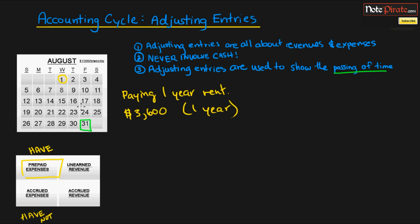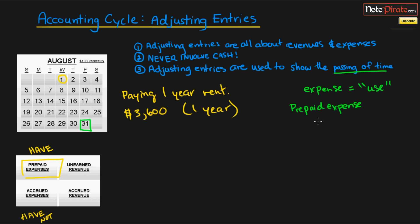We need to show an adjusting entry to report the expense of our rent, because expenses are synonymous with use — we need to show that we used one month of rent. On the 1st of August we would record a journal entry to recognize paying for the rent. It would look like a debit to prepaid expense, which is an asset, and a credit to cash, because we're paying $3,600 entirely up front.